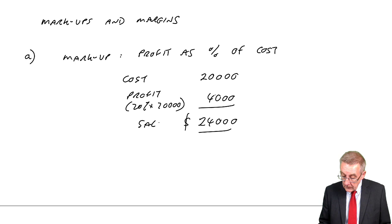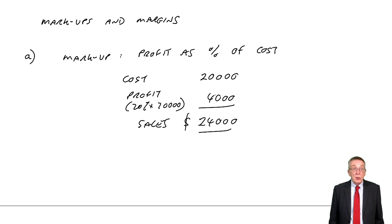So nice and easy, if we know what the cost is of what we're selling, if we know the percentage markup, we simply add on 20% of cost and there are your sales. To make it a bit more often they can have you effectively work backwards. Look at example one B.